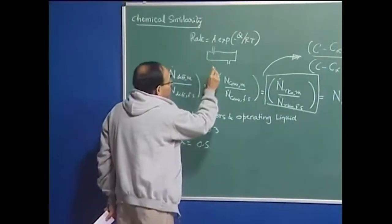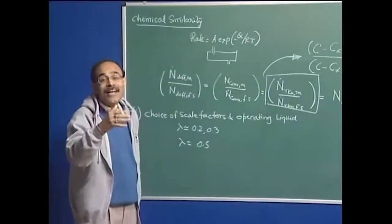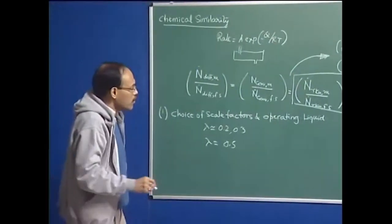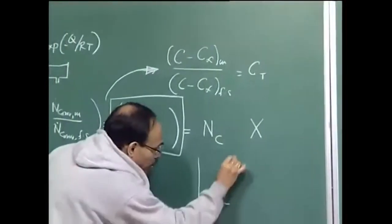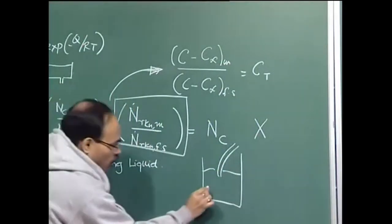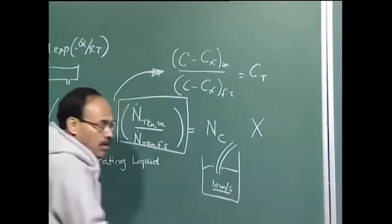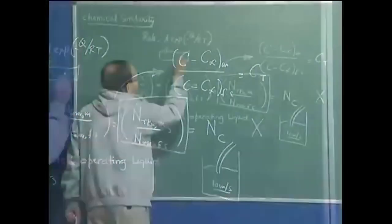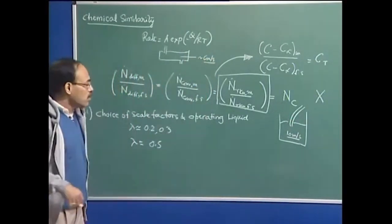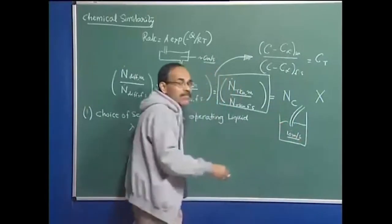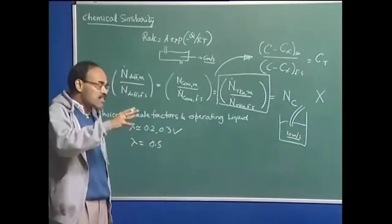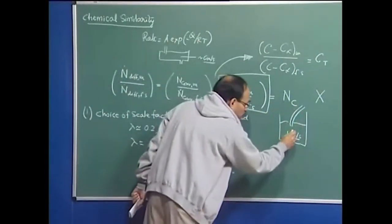We have to choose a scale factor that preserves the characteristics of the steel making system well. For example, in a ladle filling operation we have velocities of the order of 10 meters per second, while in a tundish we have velocities of the order of centimeters per second. The thumb rule is: larger is the intensity of the system, the more you can go for a relatively smaller size system, because the pouring rate is very large and the velocity is very large.